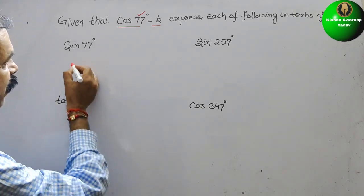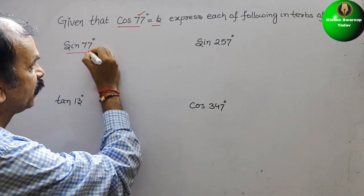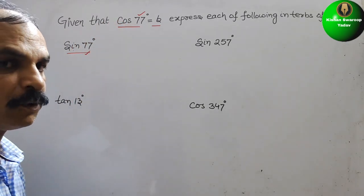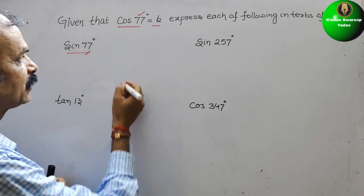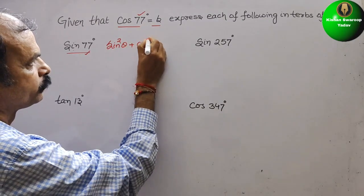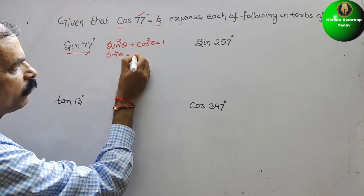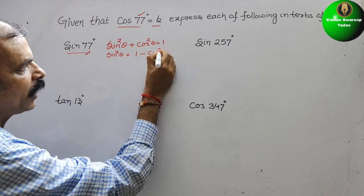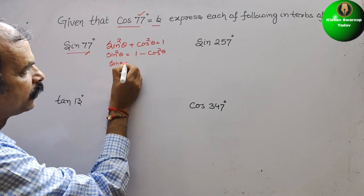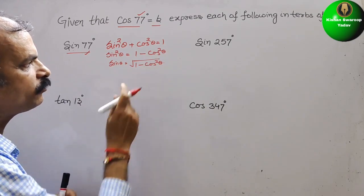First, they have given sin 77°. Since 77° is already there, we have to convert sin into cos. The formula is sin²θ + cos²θ = 1, so sin²θ = 1 − cos²θ. Since they have given only sin (not squared), we write sin θ = √(1 − cos²θ).